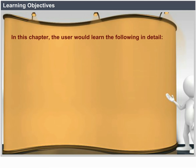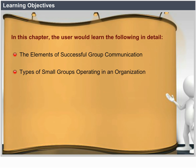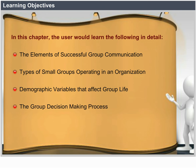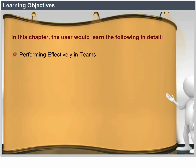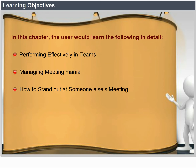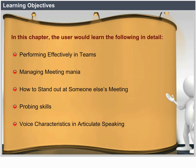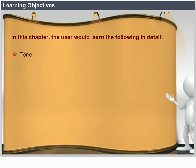Learning Objective. In this chapter, the user would learn the following in detail: the elements of successful group communication, types of small groups operating in an organization, demographic variables that affect group life, the group decision-making process, tools for effective problem-solving, performing effectively in teams, managing meeting mania, how to stand out at someone else's meeting, probing skills, voice characteristics in articulate speaking, tone, pitch, rate of speech and volume.